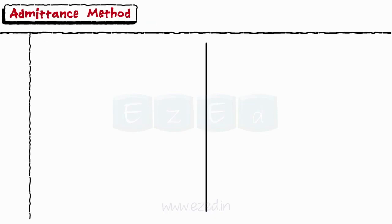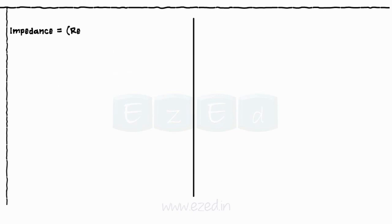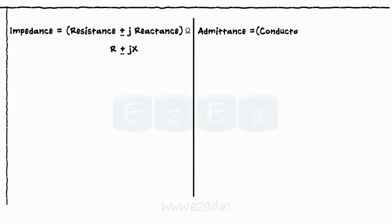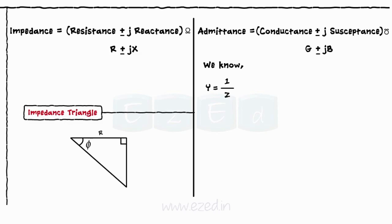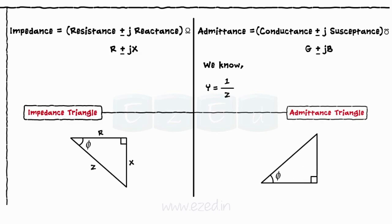The last method used for the analysis of the parallel AC circuits is the admittance method. Similar to the impedance, the admittance is also represented in the complex form as: admittance equals conductance plus or minus j times susceptance. We know that the admittance is the reciprocal of the impedance. Thus, the admittance triangle is also drawn in exactly the opposite way to the impedance triangle.